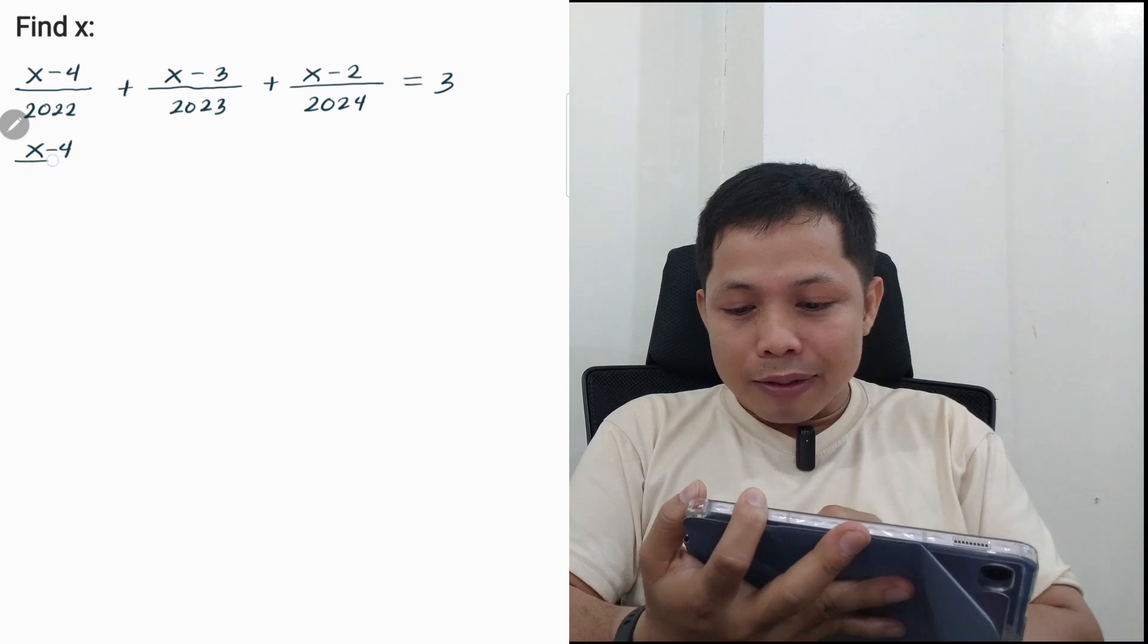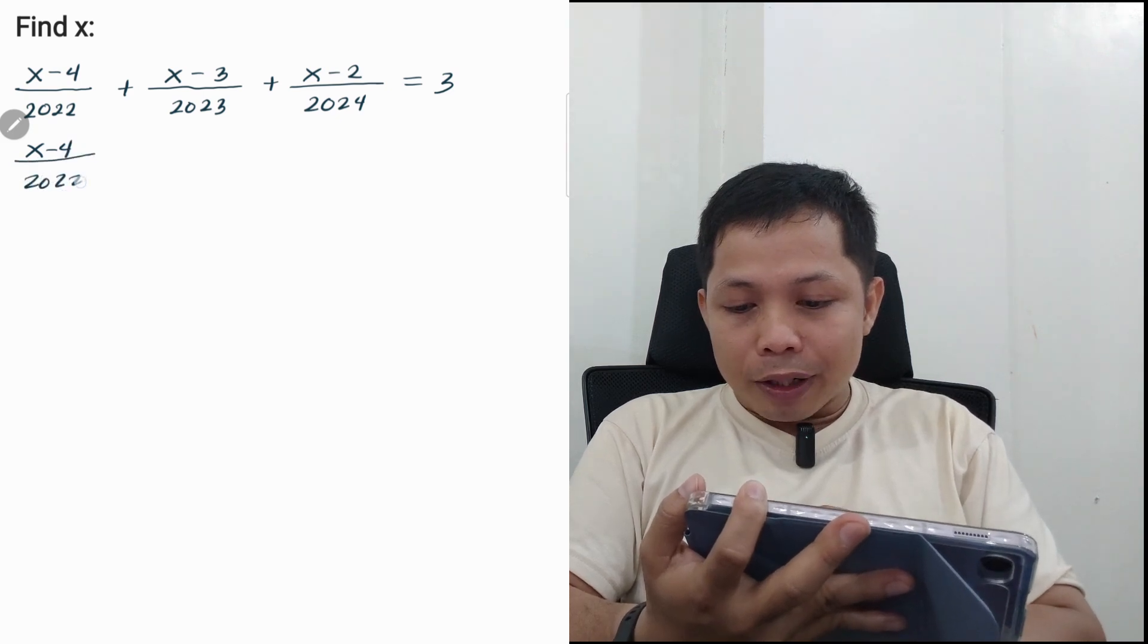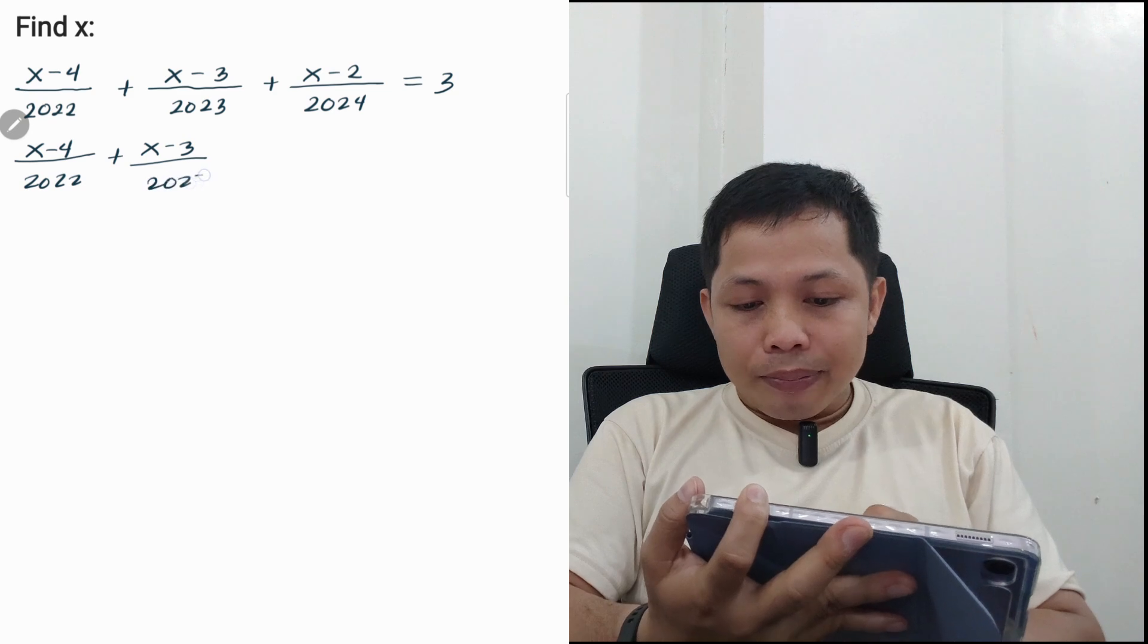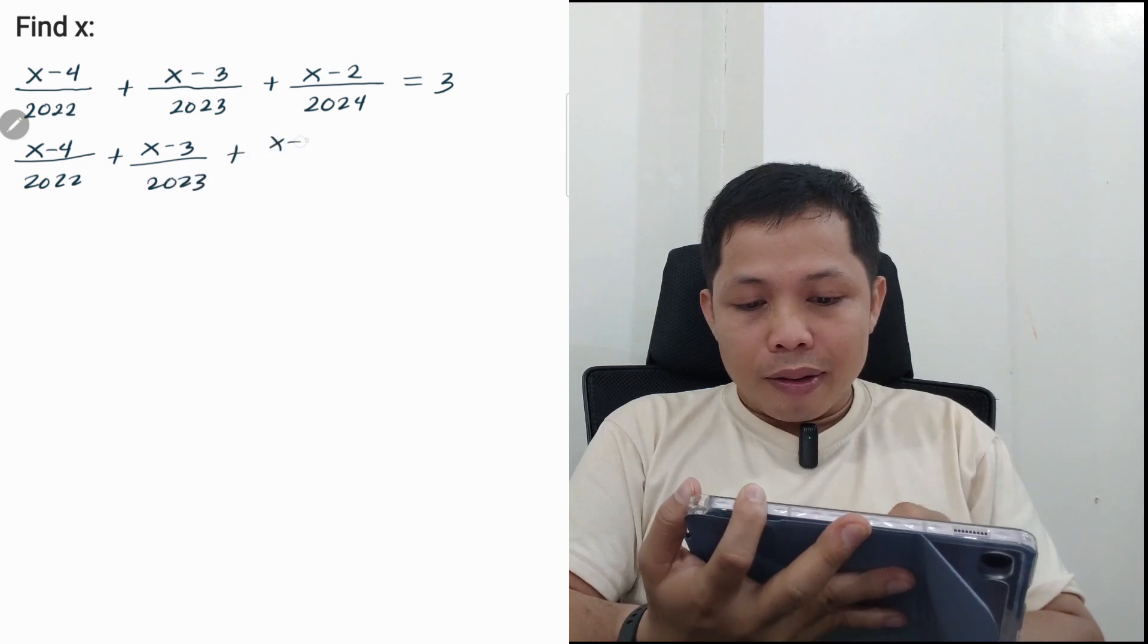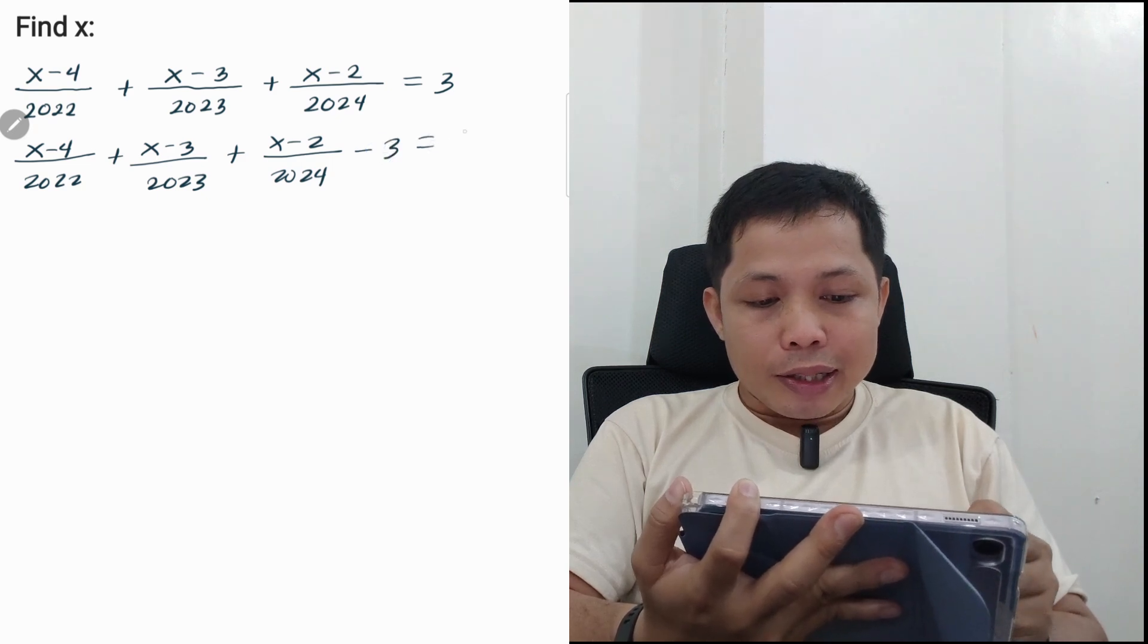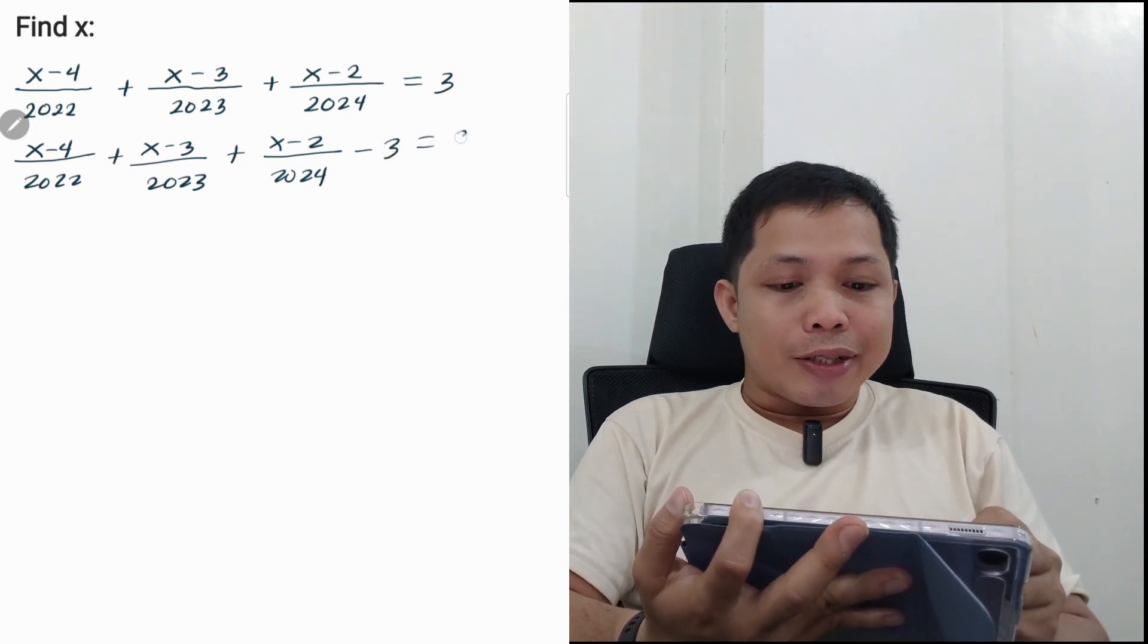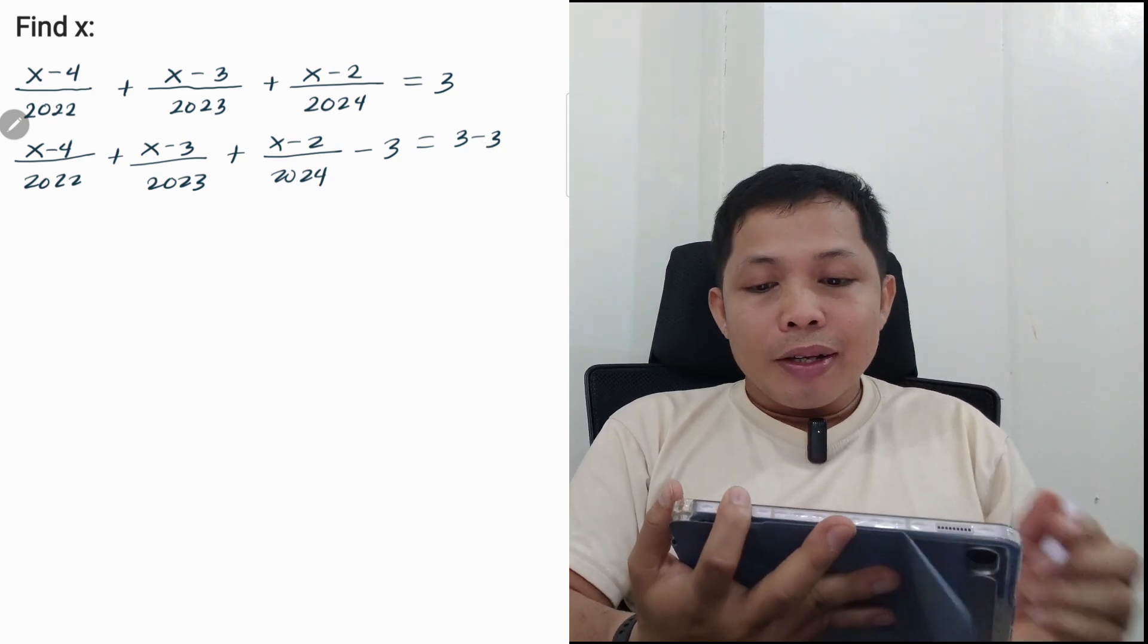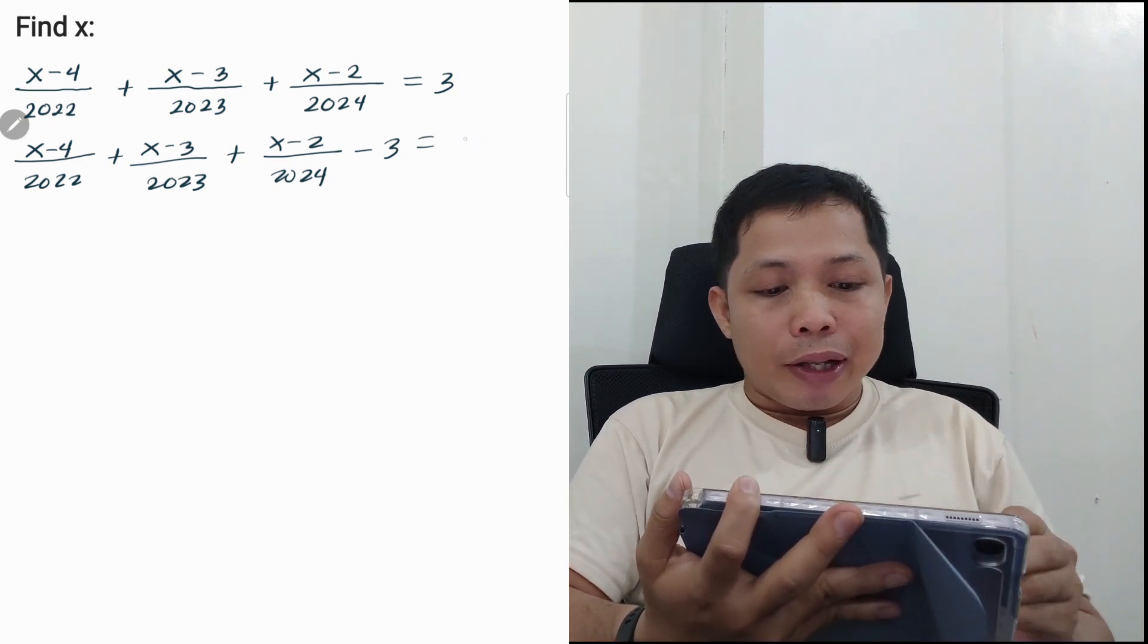So we have (x - 4)/2022 + (x - 3)/2023 + (x - 2)/2024 - 3 = 3 - 3, so that is 0. The right side is equal to 0.